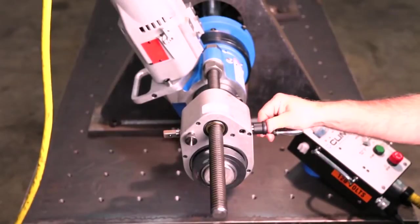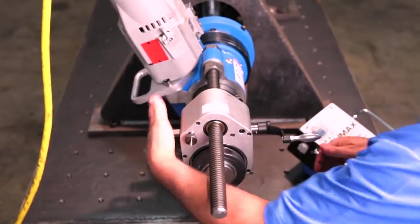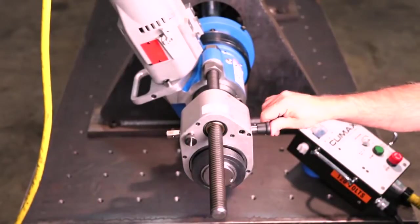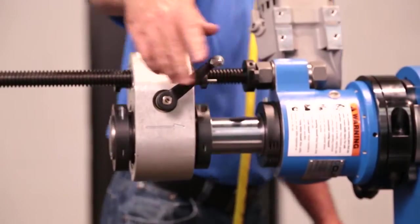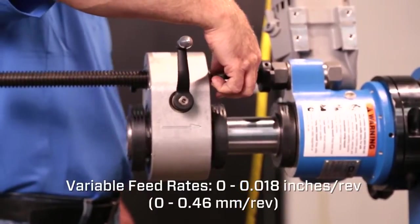Engage the axial feed unit in the direction you want to feed, forward or reverse. This can be done safely while the machine is running. As the machine begins cutting, adjust the feed rate as needed. Feed rates are infinitely variable from 0 to 0.018 inches per revolution.